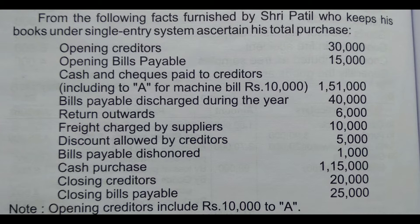Bills payable discharged during the year Rs. 40,000. Return outwards Rs. 6,000. Freight charged by suppliers Rs. 10,000. Discount allowed by creditors Rs. 5,000. Bills payable dishonored Rs. 1,000. Cash purchases Rs. 1,15,000.